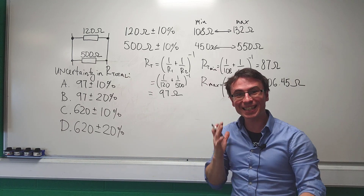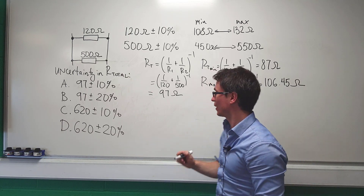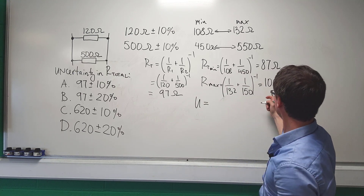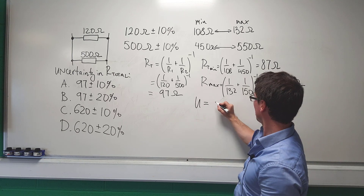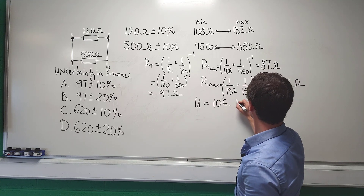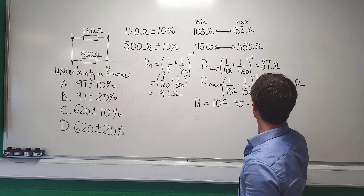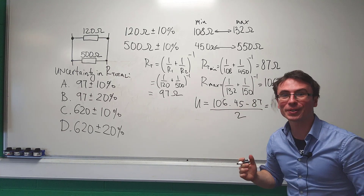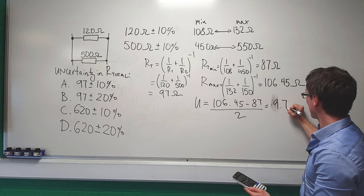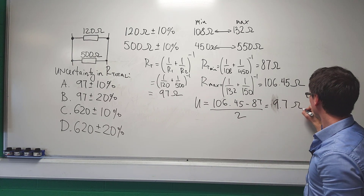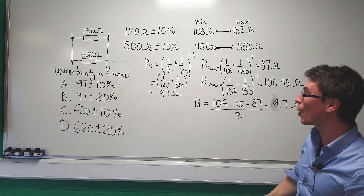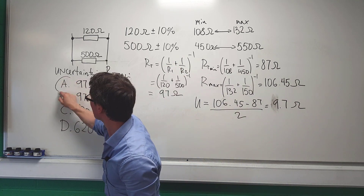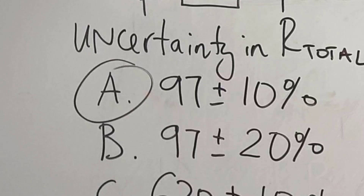Remember, uncertainty equals half the range. So the uncertainty is (106.45 minus 87) divided by 2, which gives us around 9.7 ohms. Now 9.7 ohms is approximately 10% of our answer of 97 ohms, so the correct answer is A.